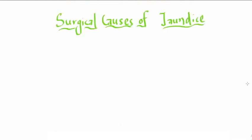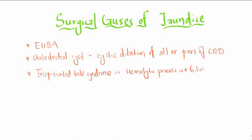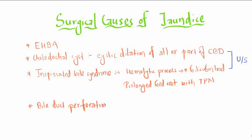Differential diagnosis includes surgical causes of jaundice: extrahepatic biliary atresia, choledochal cyst with cystic dilation of all or part of common bile duct, and inspissated bile syndrome. This follows hemolytic process which increases bilirubin load due to prolonged bed rest with total parenteral nutrition. It can be differentiated by ultrasound and bile duct perforation.